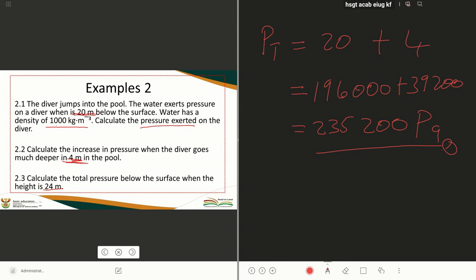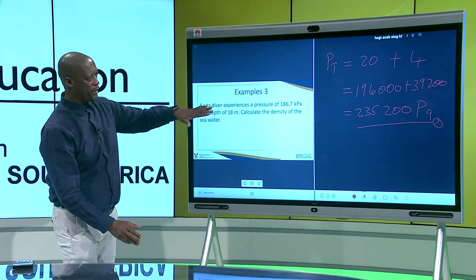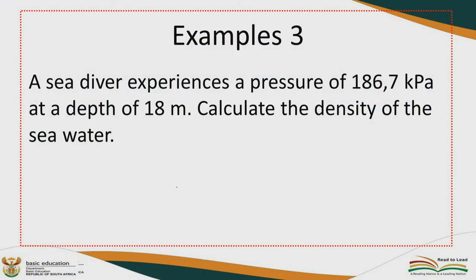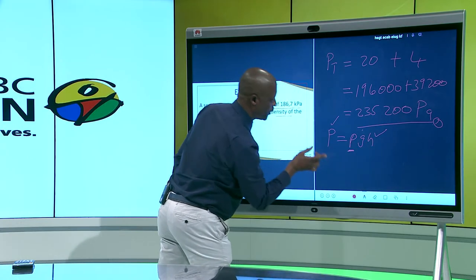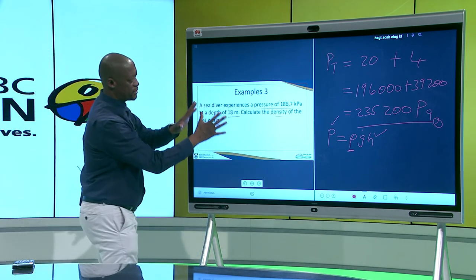This next one is for you to practice at home. A sea diver experiences a given pressure — convert it from kPa to Pascal. You are given the depth. Calculate the density. Use P equals ρgh: you have pressure, you know gravity (9.8), you have height — divide to find the one unknown, which is density.